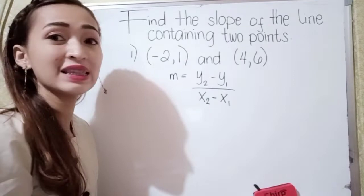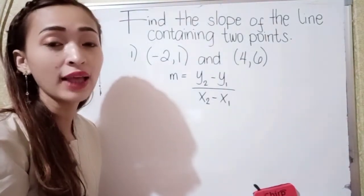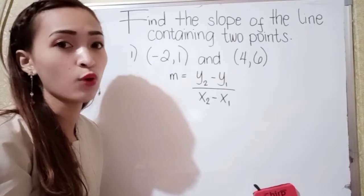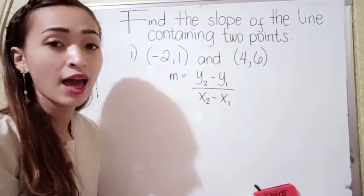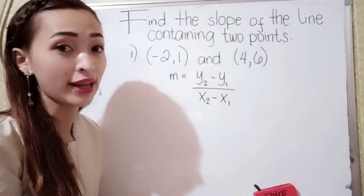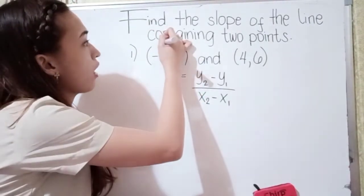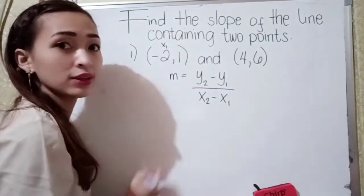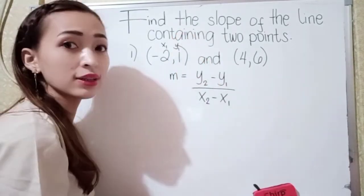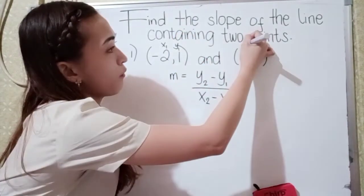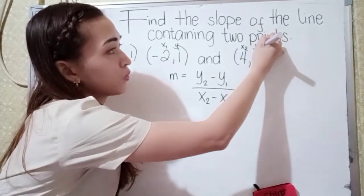What we're going to do is substitute the values of y sub 2, y sub 1, x sub 2, and x sub 1. But first, let's identify which is y sub 2, y sub 1, x sub 2, and x sub 1. In this point, this would be our x sub 1, this is our y sub 1, this is our x sub 2, and this is our y sub 2.